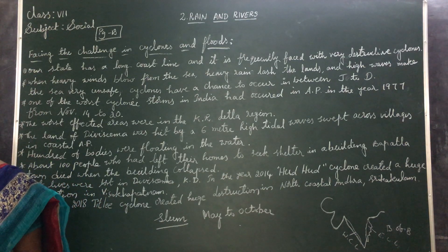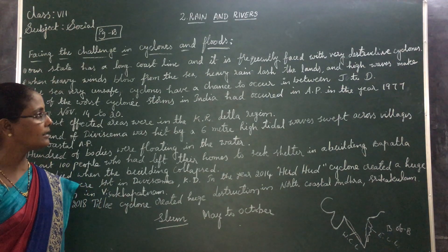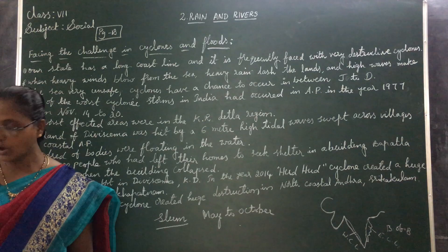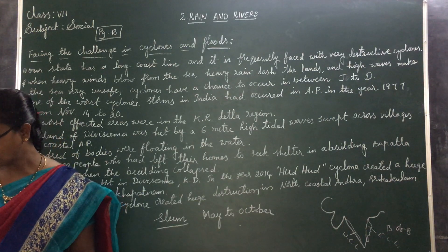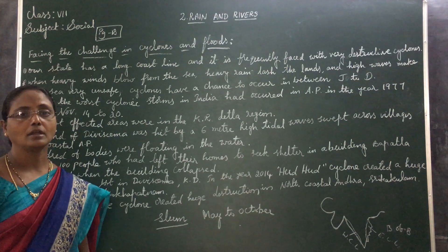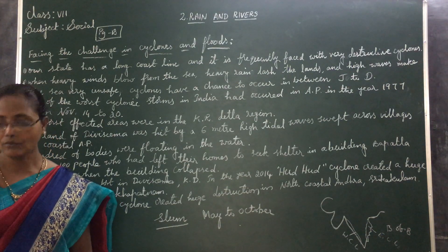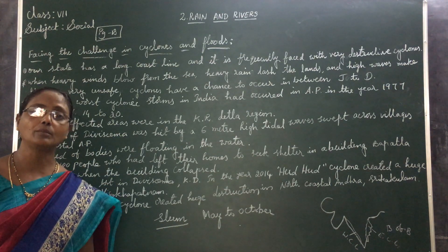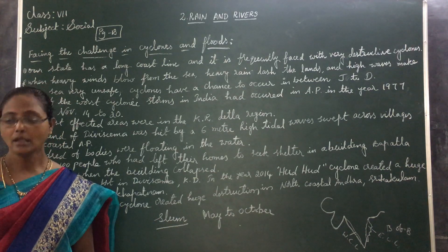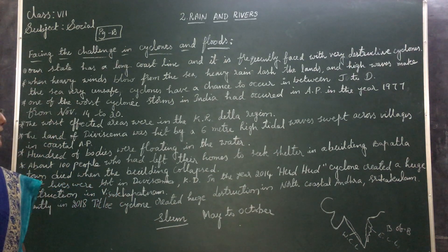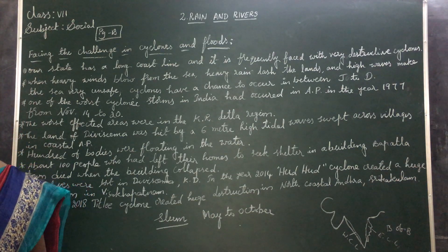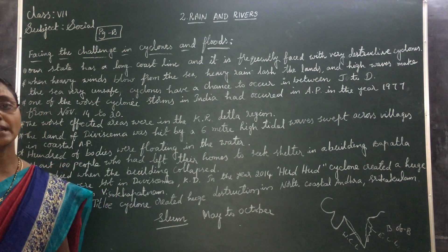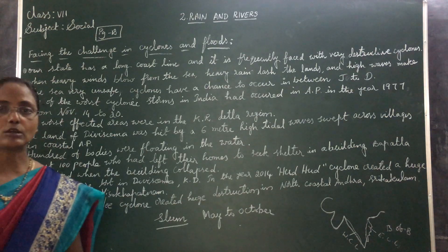Normally, when do the cyclones and floods occur? Cyclones and floods are occurred in the months of June and December. When do cyclones form in the Bay of Bengal? In the months of May to October. Which areas are affected by cyclones and floods? The coastal areas are affected by cyclones.